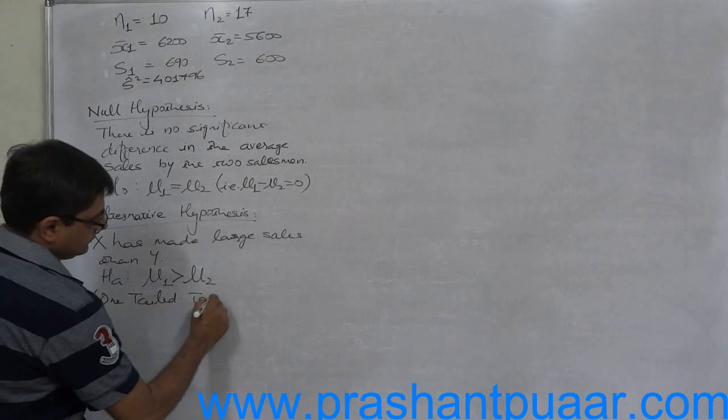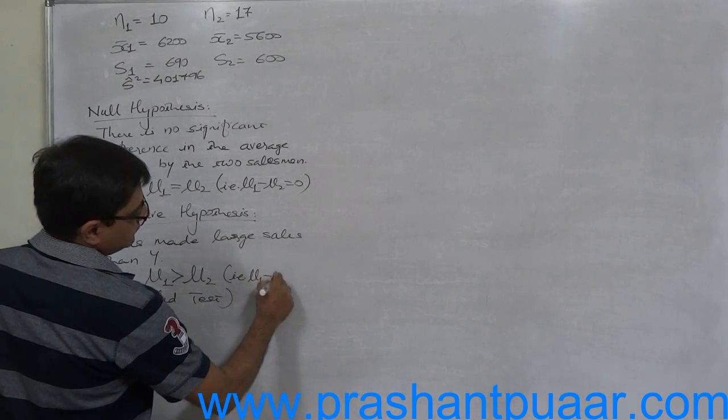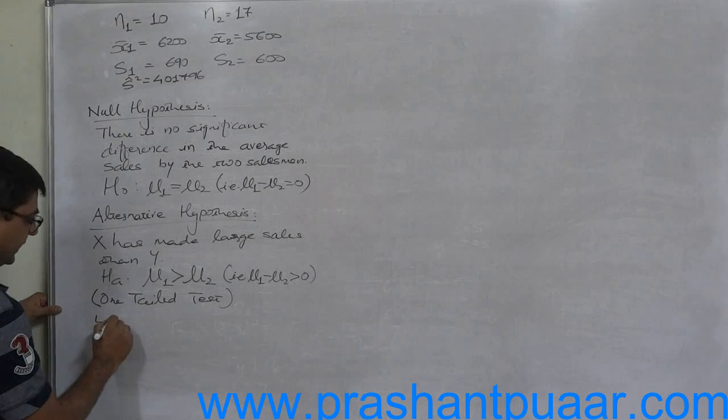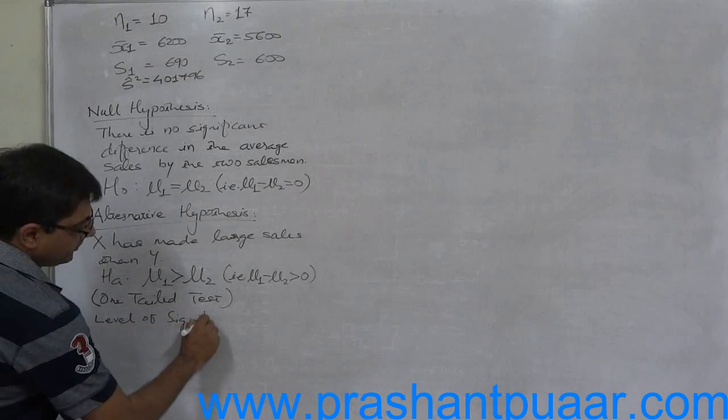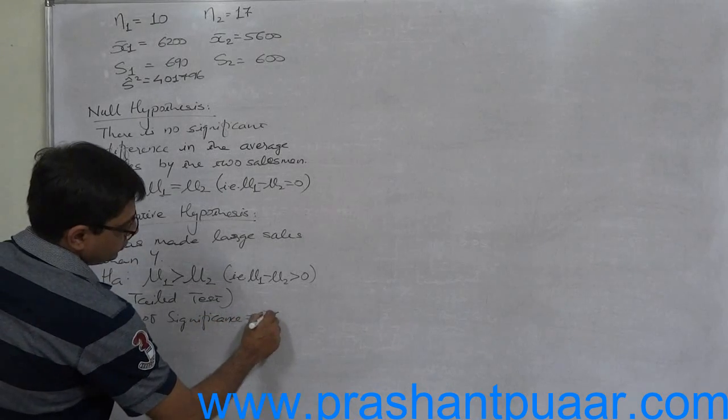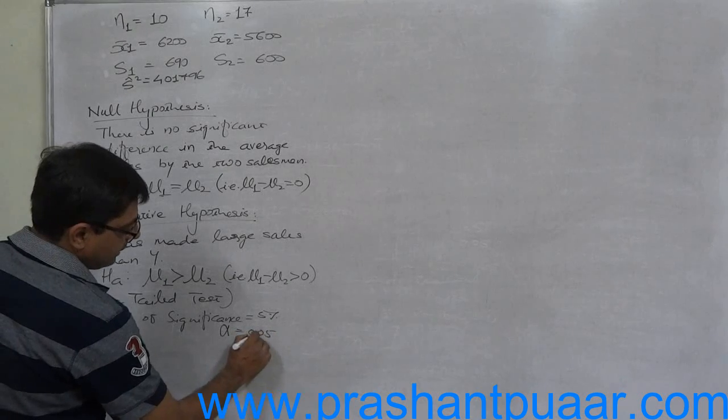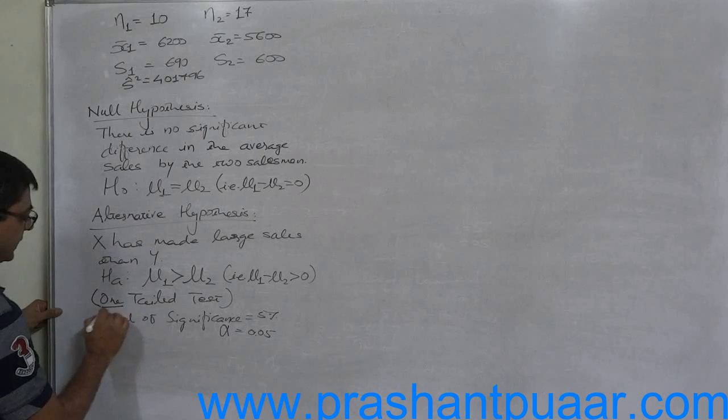Level of significance: no specific info, so we are going to take it 5 percent, alpha equals 0.05. And no need to divide alpha by 2 because this is case of one-tailed test.